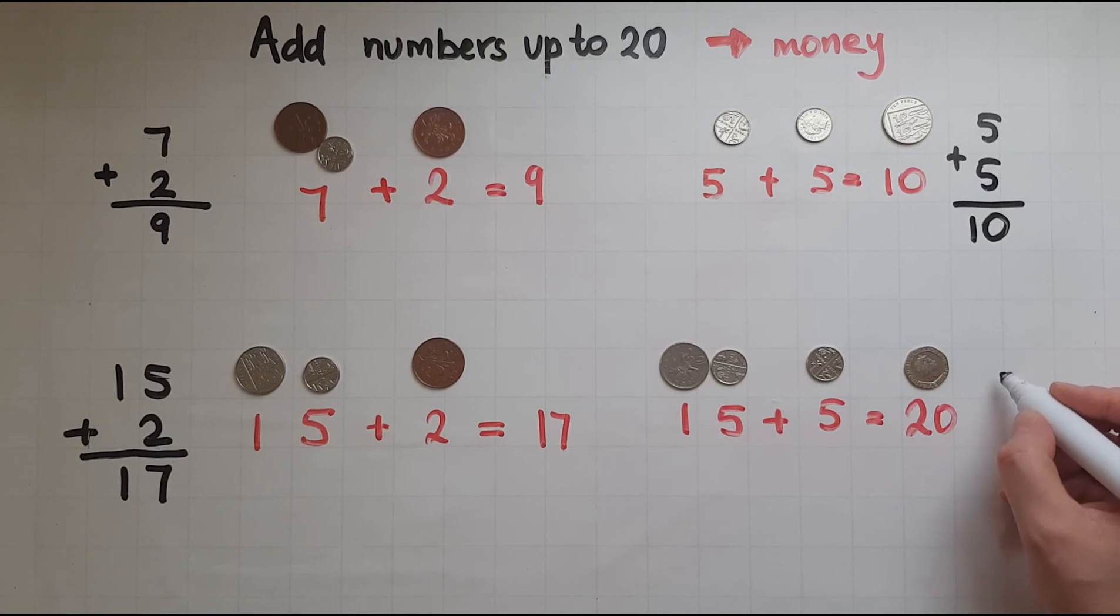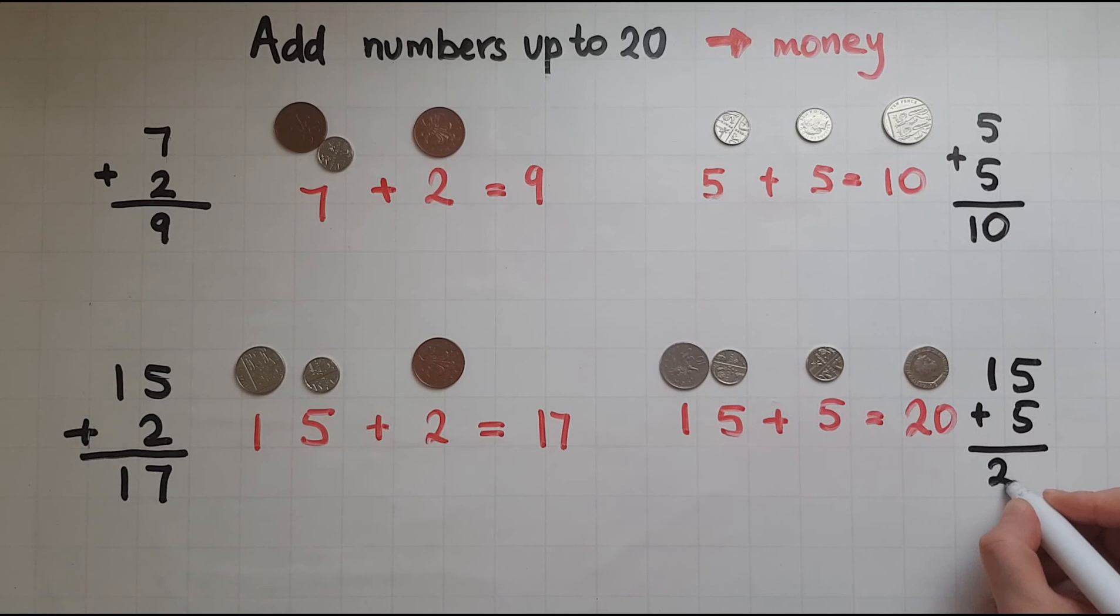15. And the same thing. We've got 15 plus the five again under the same column. So that makes five and five makes ten. But I have another 10P coin here. So that makes together 20 pence. So this is how we add numbers up to 20.